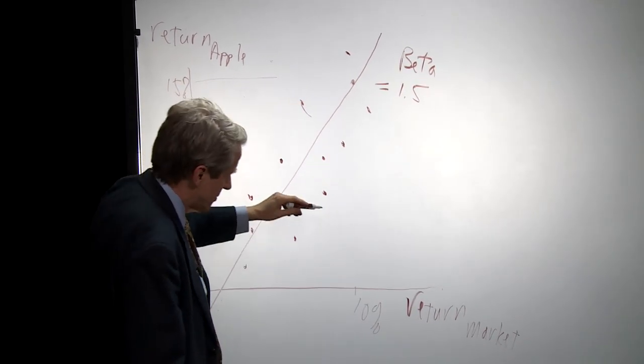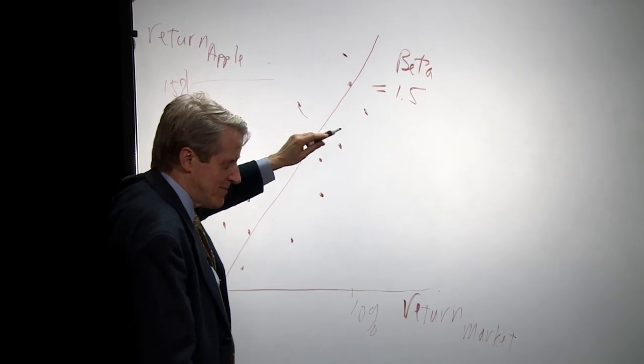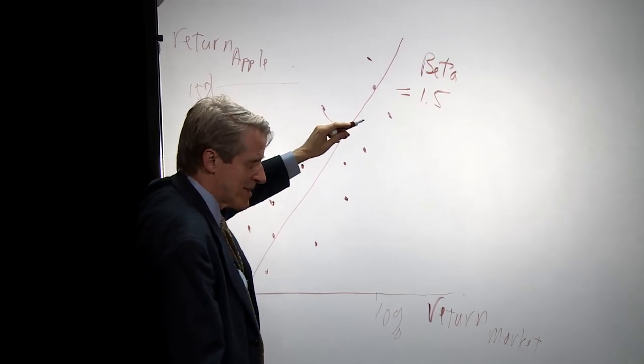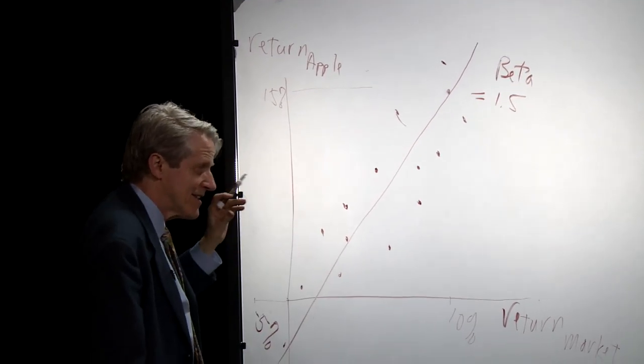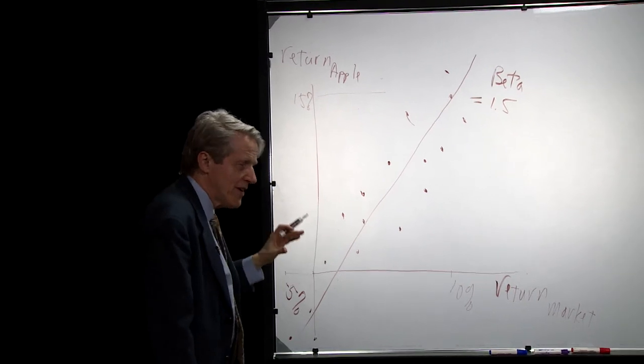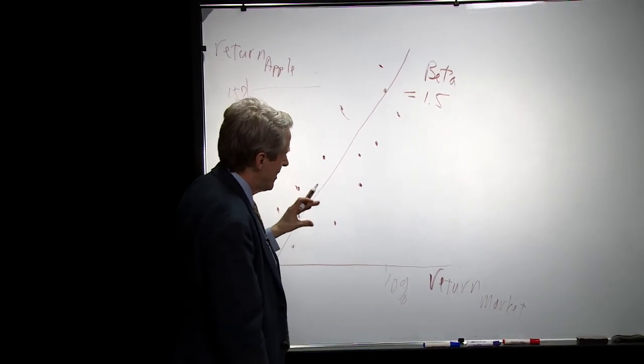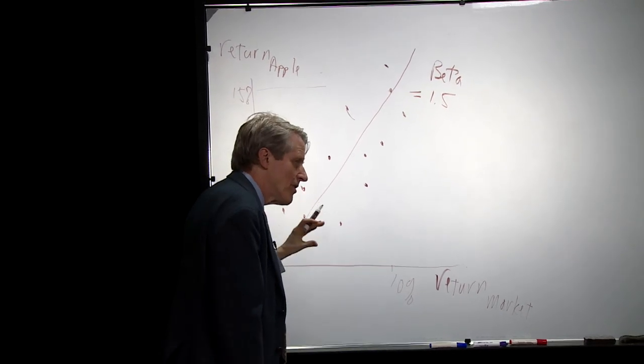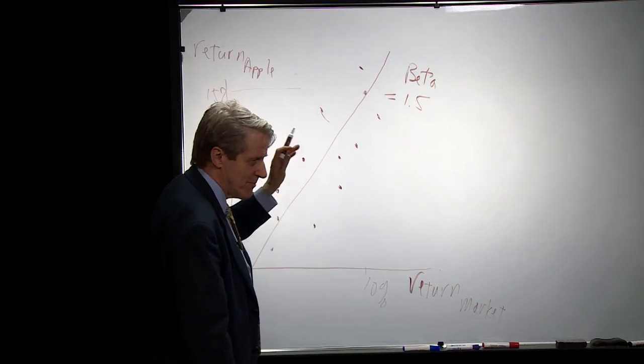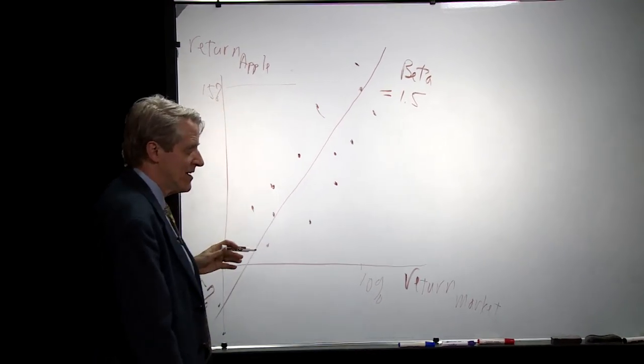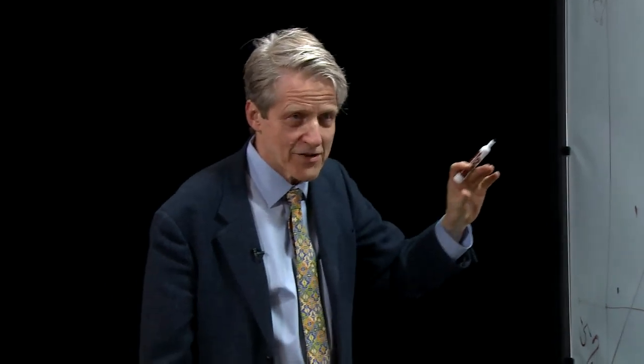So the market could do great in one year, and Steve Jobs could get sick in that year. It's just something. And so Apple didn't do well. That's idiosyncratic. The theory of the capital asset pricing model is that investors care more about beta than they do about idiosyncratic risk, because all those companies' idiosyncratic risk will average out and won't matter. What matters is the systematic risk, the risk that correlates with the market. And those things don't average out no matter how many stocks you put in your portfolio.